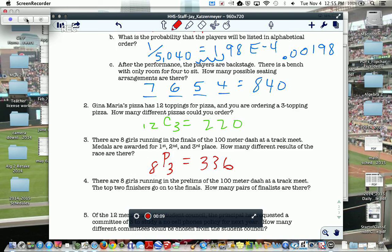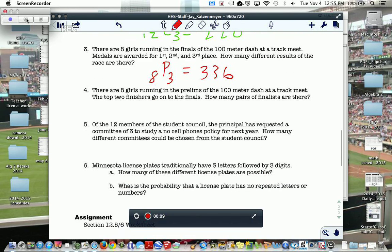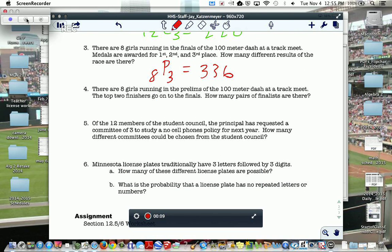But now, the next problem is there are eight girls running in the prelims. Now, prelims just mean you're not in the finals yet to win an award, and they'll take the top two finishers. So, it doesn't matter if you finish first or second, you get to go on. So, if runner A gets first and runner B gets second, they go to the finals. But if runner B gets first and runner A gets second, they both go to the finals anyway. So, whether it's B, A, or A, B, it'll end up being the same thing.